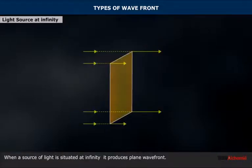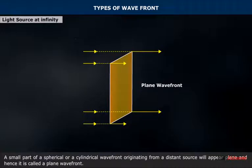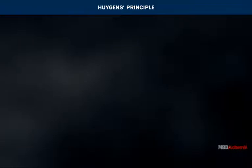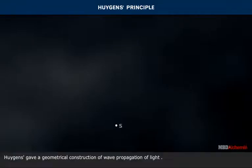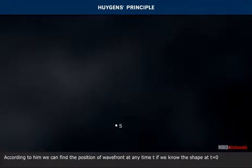When a source of light is situated at infinity, it produces a plane wavefront. A small part of a spherical or cylindrical wavefront originating from a distant source will appear plane, and hence it is called a plane wavefront.